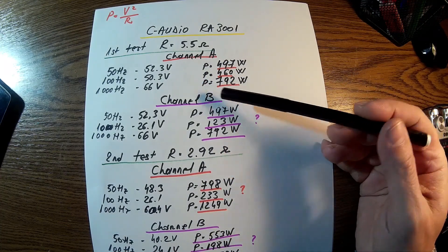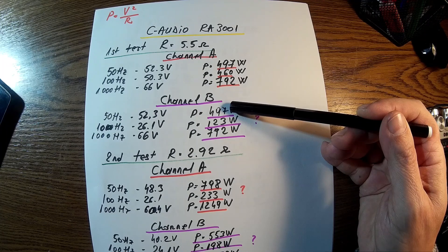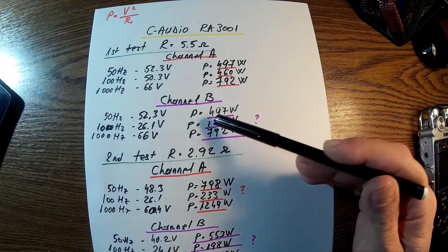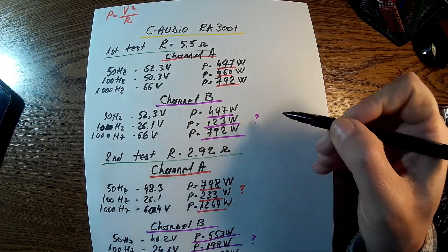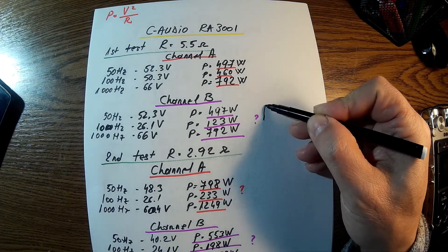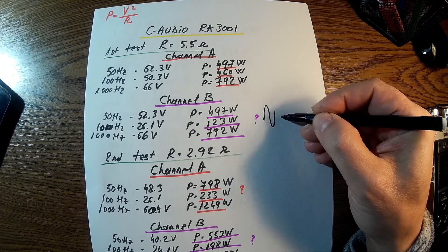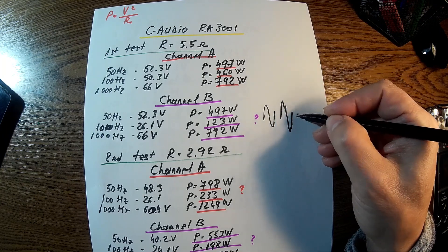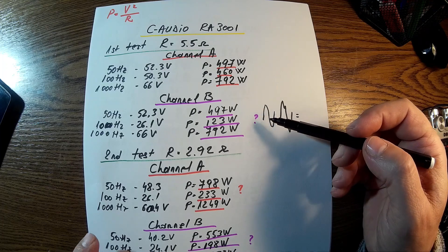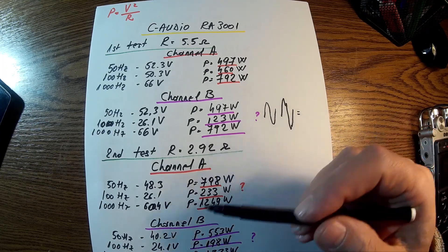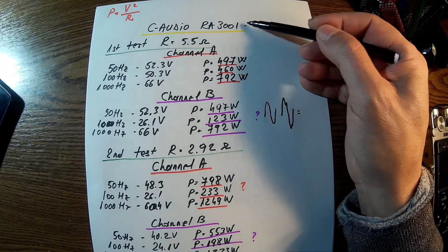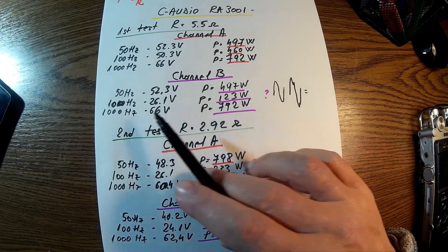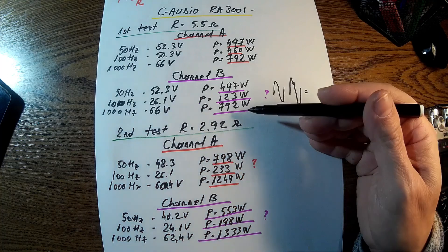Channel B, we have almost the same for 50 Hz. 100 Hz, here is a problem. We have 123 watts because something strange with the sinus. Instead of having this kind of sinus, if we push it too much, we have a kind of dent or something. That's for sure the electrolytics have to be changed. This amplifier is almost 20 years old, so it's time for that. And the same story. It behaved pretty good with 1000 Hz.